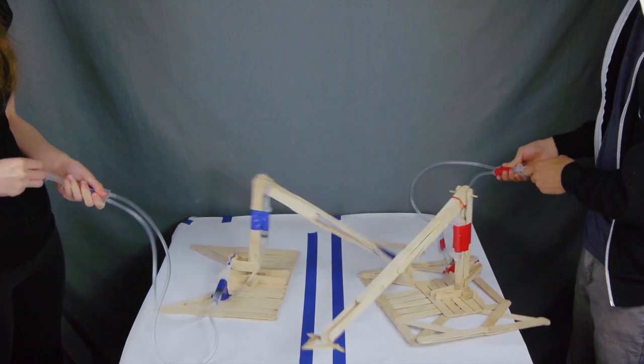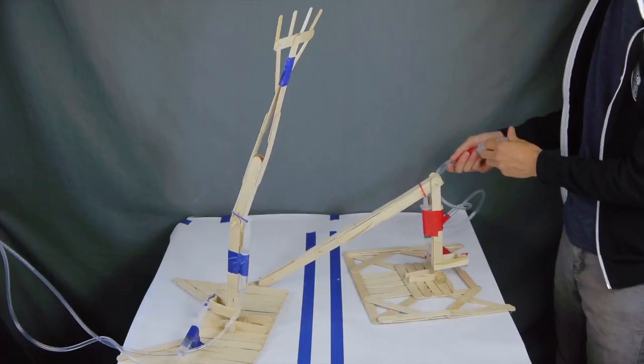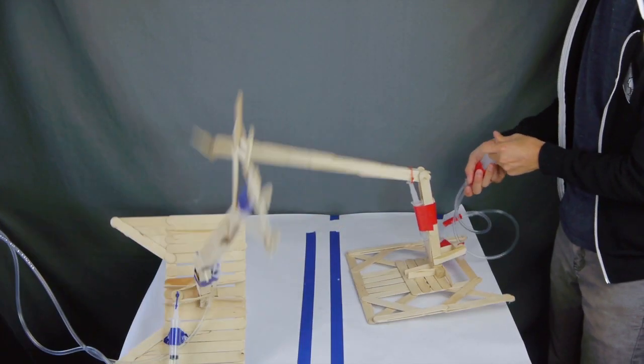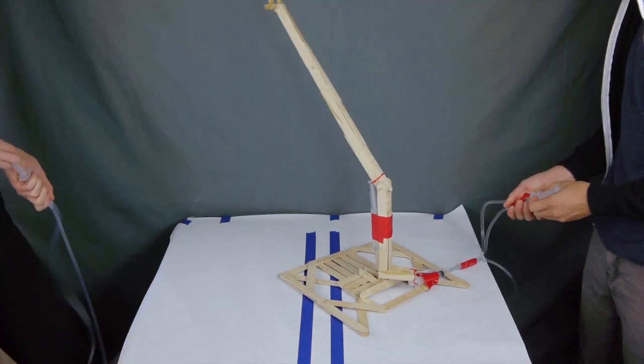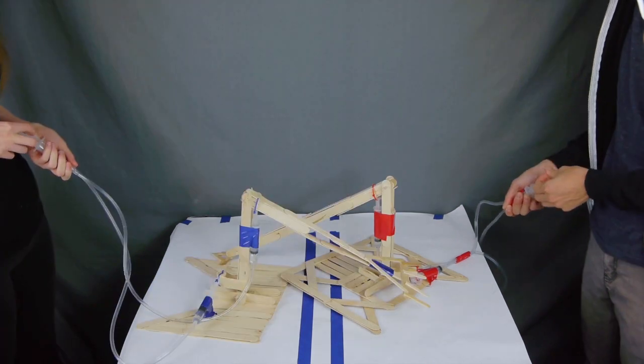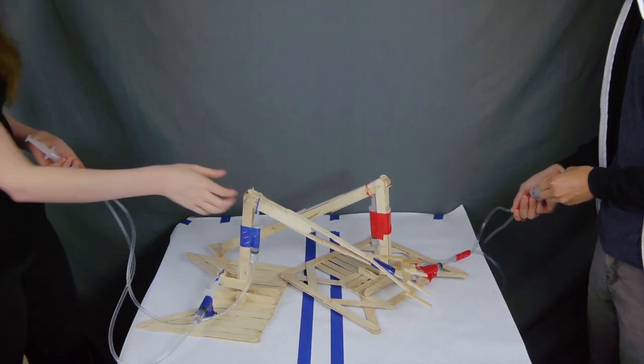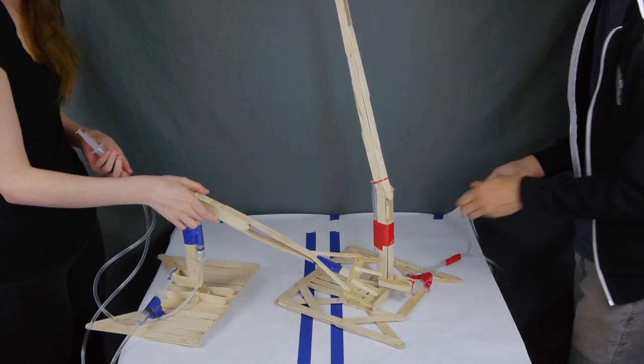You can win by pushing your opponent off of the table, or by flipping them over in such a way that they can't right themselves. It's also possible to win if your opponent flips themselves off of the table. If neither robot can effectively reach the other, then the players can agree to a stalemate and restart.